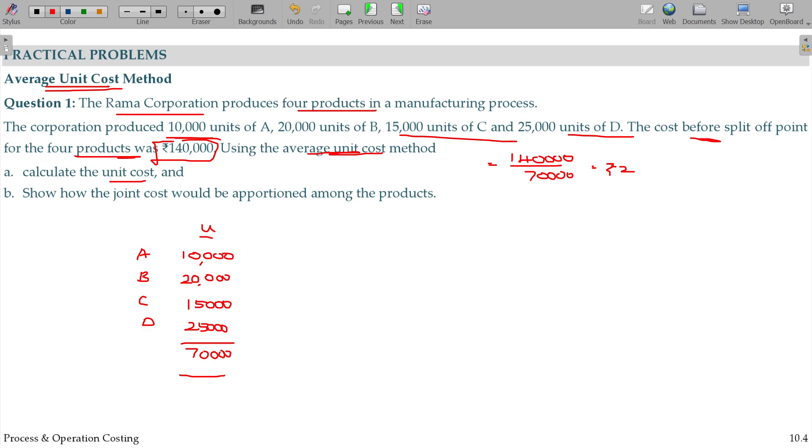Calculate the apportioned cost. Now multiply by the unit cost. The first case being 20,000, second case 40,000, third case 30,000, and last 50,000. The overall value is 140,000. We got this value. Is that clear?